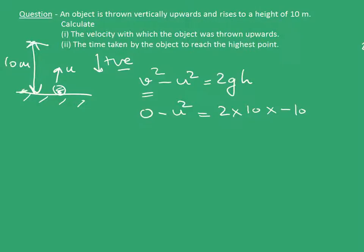We are measuring from the surface to the height of 10 meters and it is in the negative direction. Therefore u² is 200, which implies u is 10√2 meters per second.